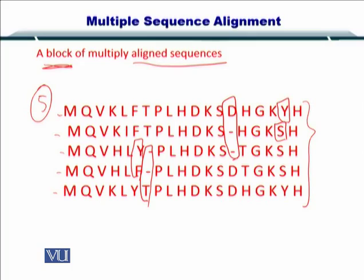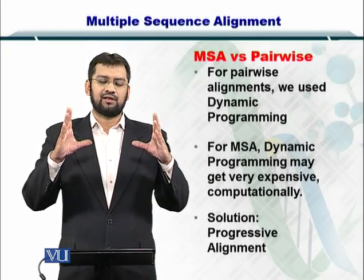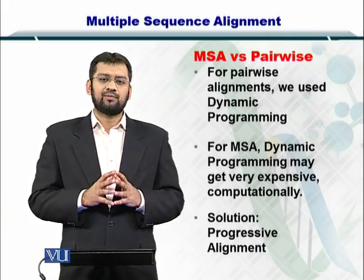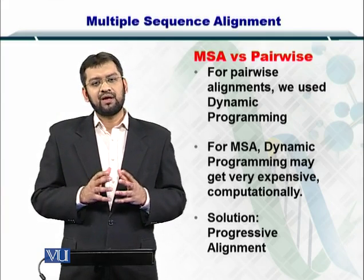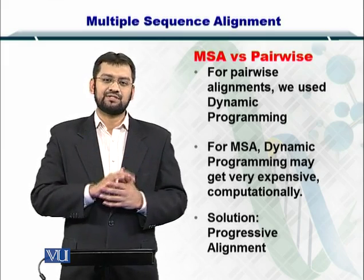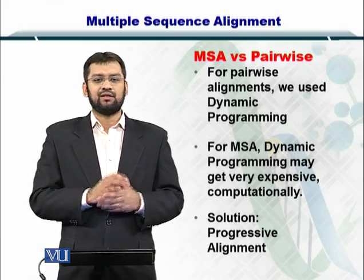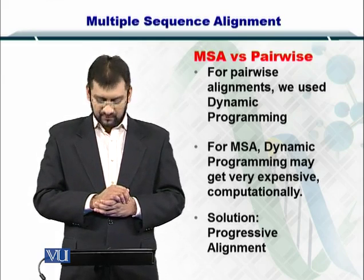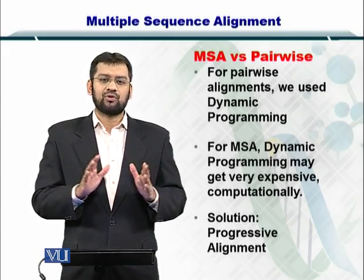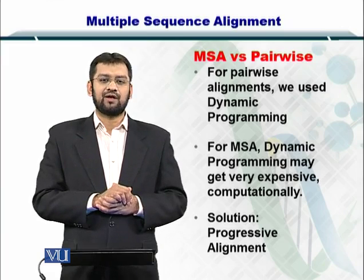For pairwise sequence alignment, we use the dynamic programming paradigm in which we had an entire alignment matrix and computed each position within this matrix step by step. But imagine a case where you have to compare multiple sequences — you would have to perform dynamic programming in multiple dimensions. That will increase the computational cost to such a proportion that we will not be able to run the program. In case of MSA, typically we do dynamic programming for no more than nine or ten sequences. If you have more sequences, then we move to progressive alignment strategies.